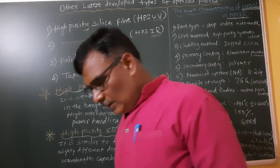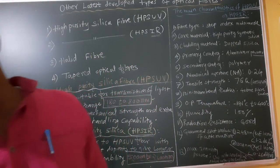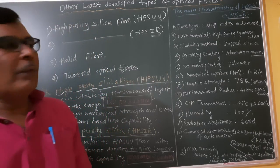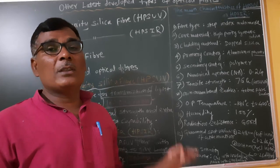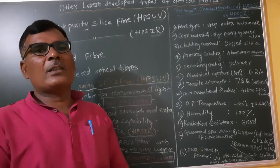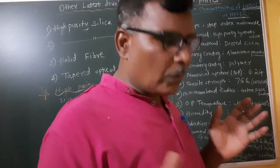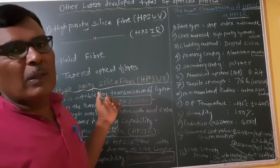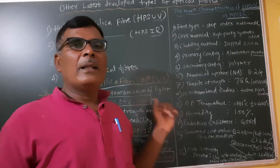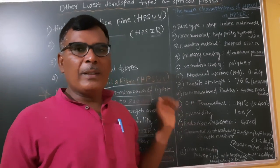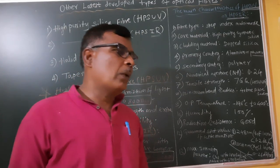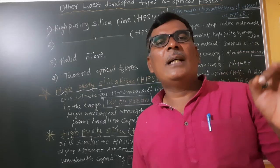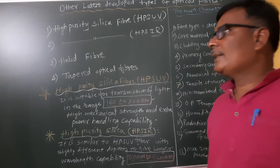Now we are going to discuss the characteristics of HPSIR and HPSUV. There are approximately 13 characteristics for high purity silica UV or IR radiation fiber. Long questions may be asked about these characteristics, but nowadays exams are based on multiple choice questions. Remember the wavelengths and also the 13 characteristics. The 13th characteristic is the fiber type used — that is step index multimode fiber.